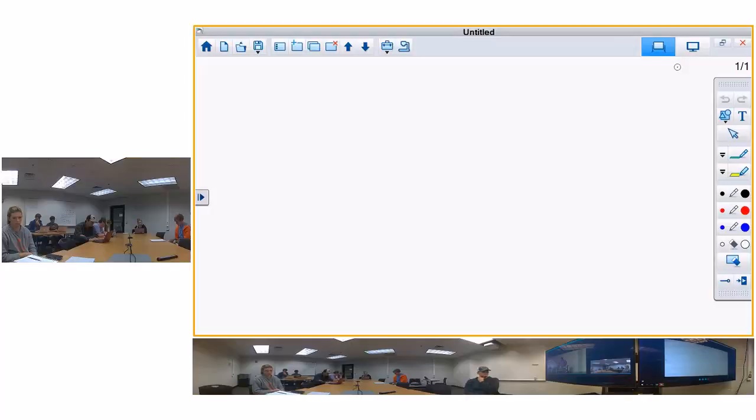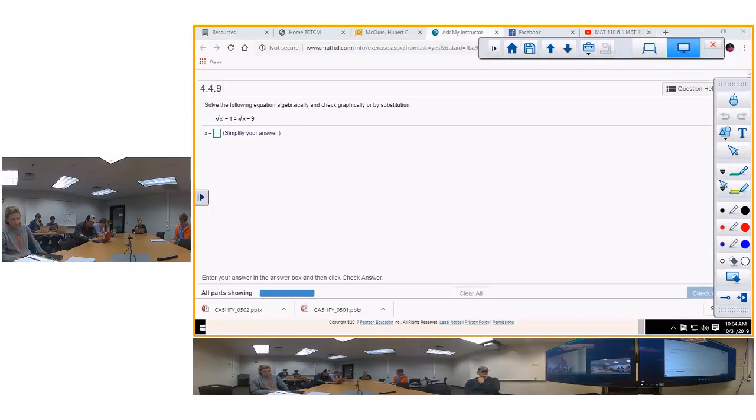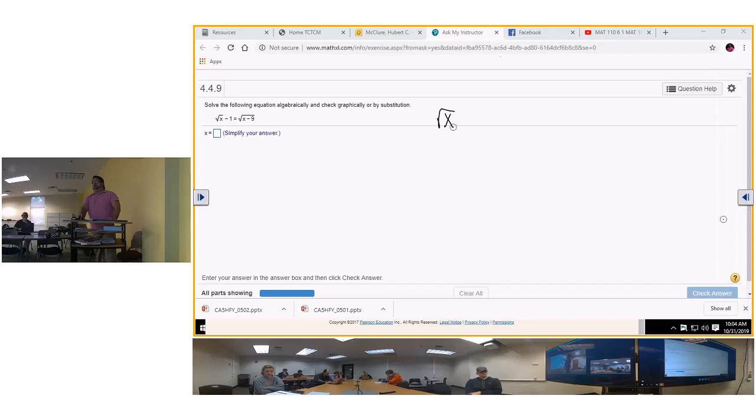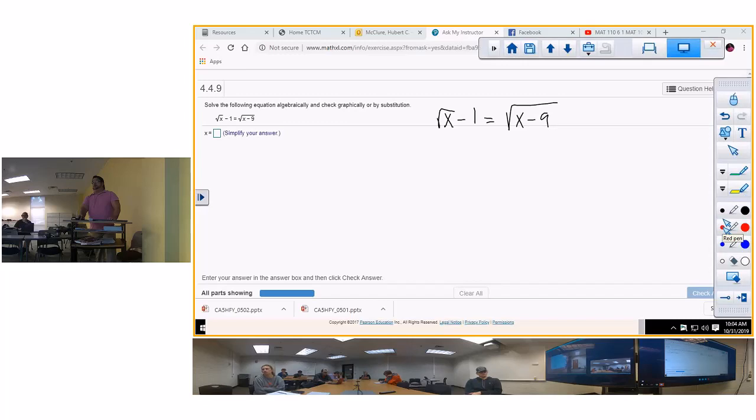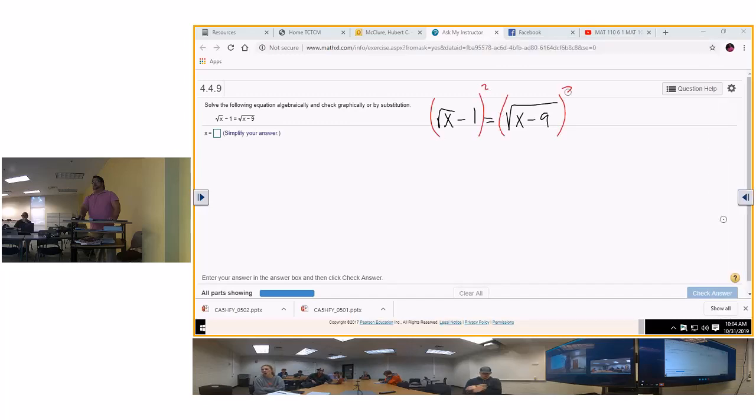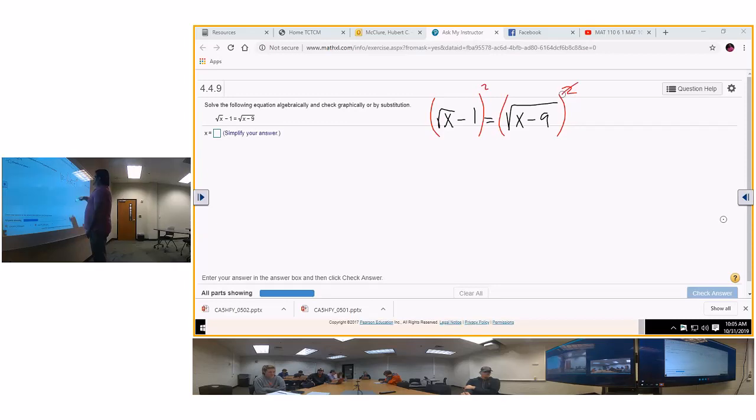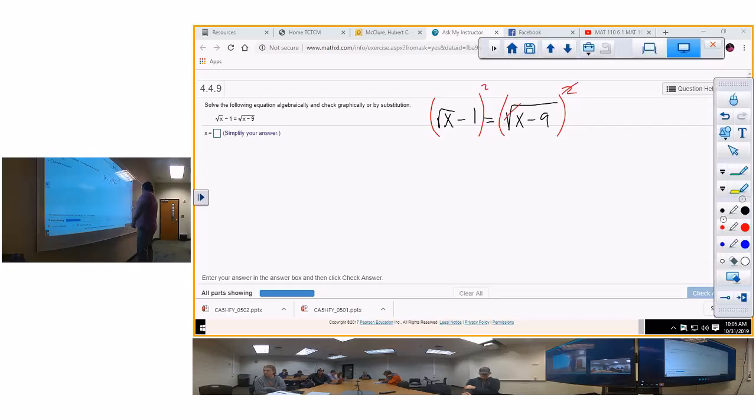And it is the square root of x minus 1 is equal to the square root of x minus 9. So, the square root of x minus 1 is equal to the square root of x minus 9. The first thing you're going to do is square both sides. Now, you've got shortcut number 2 on the left. And what does the square do to the radical over here? Cancels it.